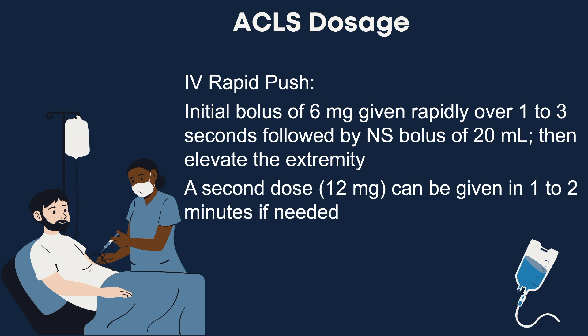Draw out the Adenosine dose in one syringe and a 20 ml flush in another. Attach both syringes to the same or immediately adjacent IV injection ports nearest to the patient, with Adenosine closest to the patient. Clamp the IV tubing above the injection port and push the Adenosine as quickly as possible, usually in 1 to 3 seconds. While maintaining pressure on the Adenosine plunger, push the normal saline flush as rapidly as possible after the Adenosine. Unclamp the IV tubing and elevate the patient's arm.